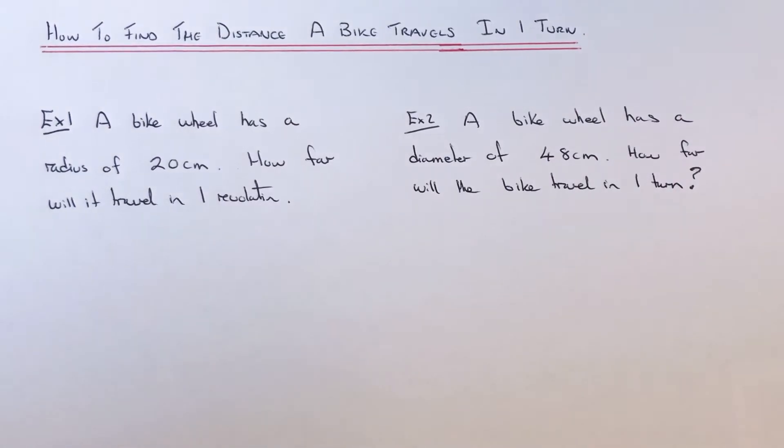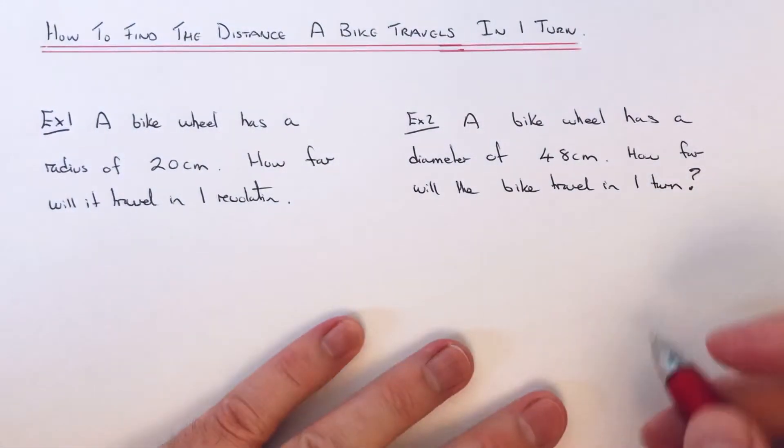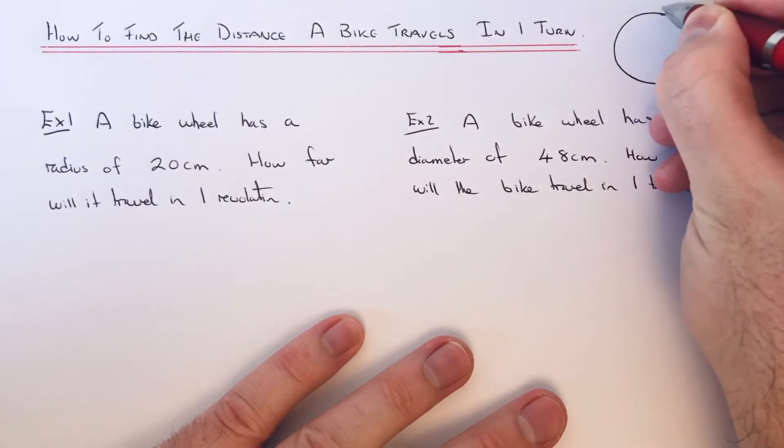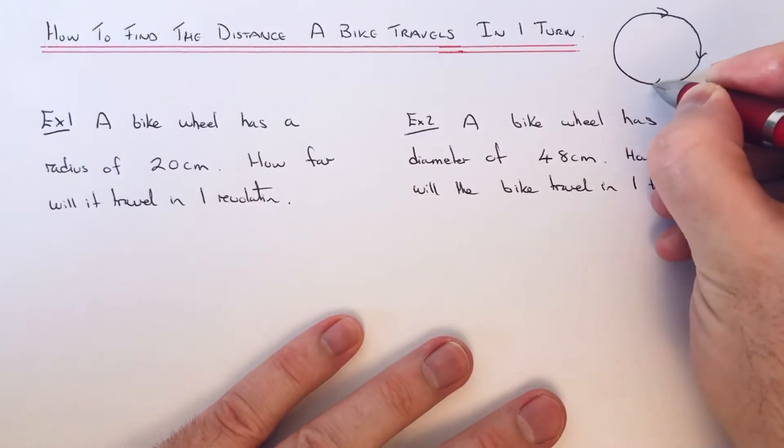Hi guys, welcome back. This is Maths 3000. Today I'm going to show you how to work out the distance travelled by a bike in one revolution. To do this, you'll have to work out the circumference of a circle. The distance around the edge of the circle is called the circumference, and this is the same